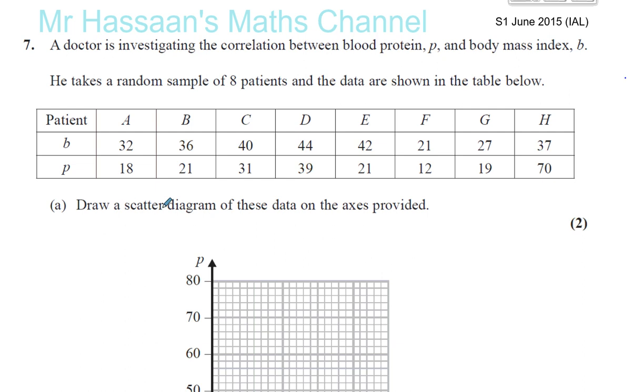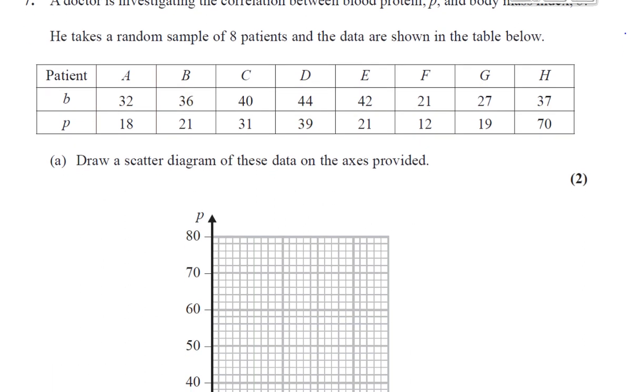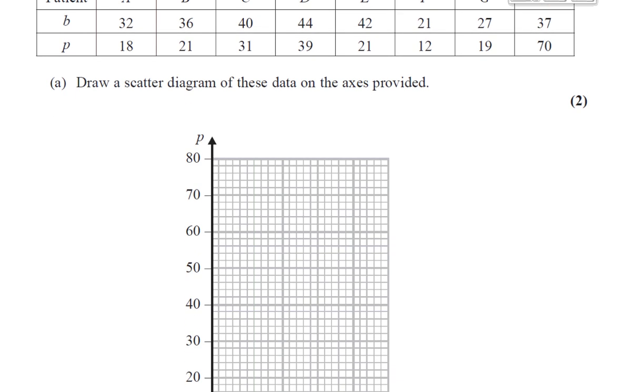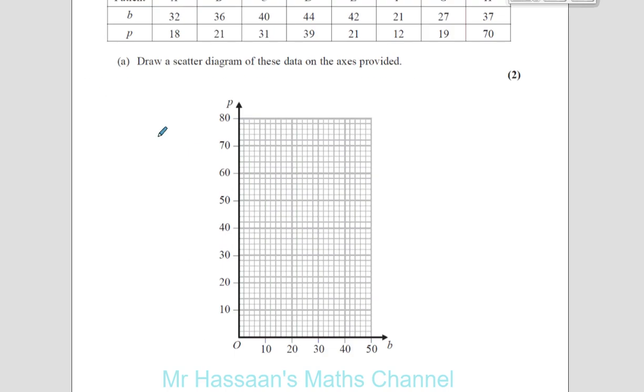Draw a scatter diagram of these data on the axis provided. So we have to plot these values B against P on this axis. Let me just zoom out a bit so you can see what's happening. When B is 32, P is 18. So 32, you can see there's five squares for 10 units, so each square is 2 units. That's 32 and 18 is going to be right here. Put a little cross there. That's patient A.